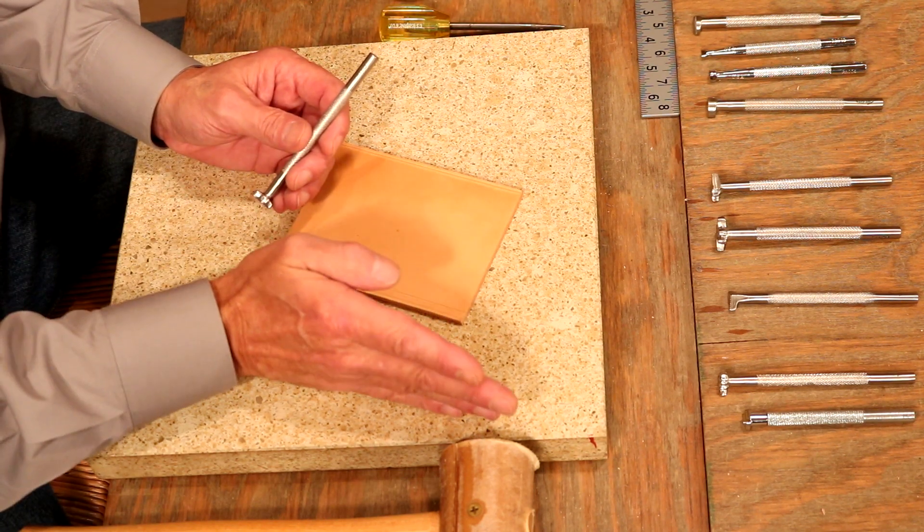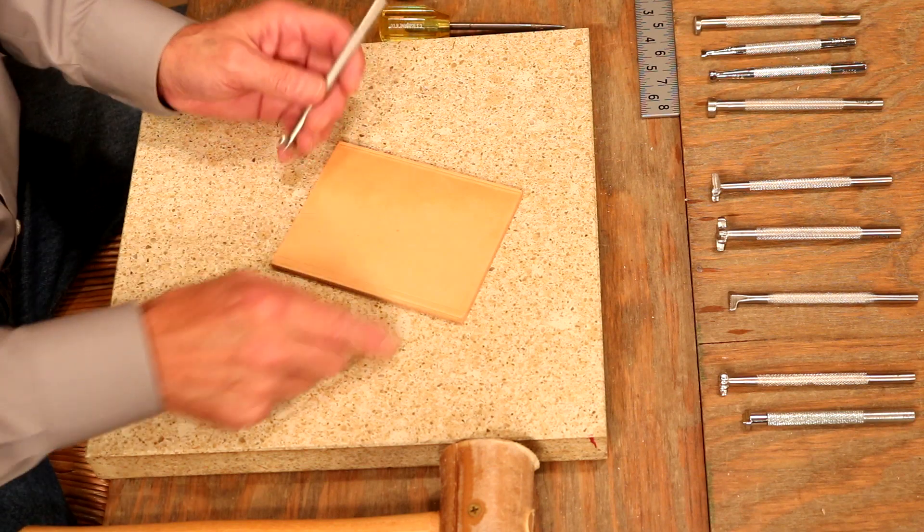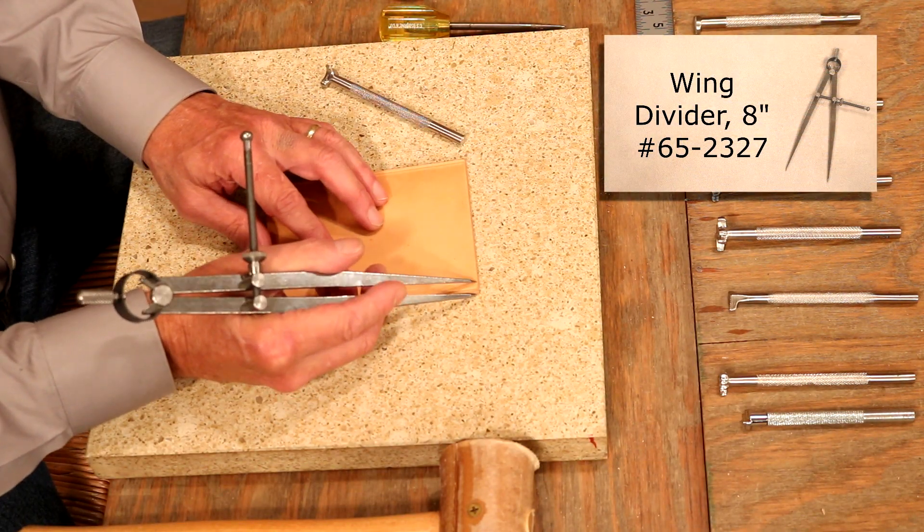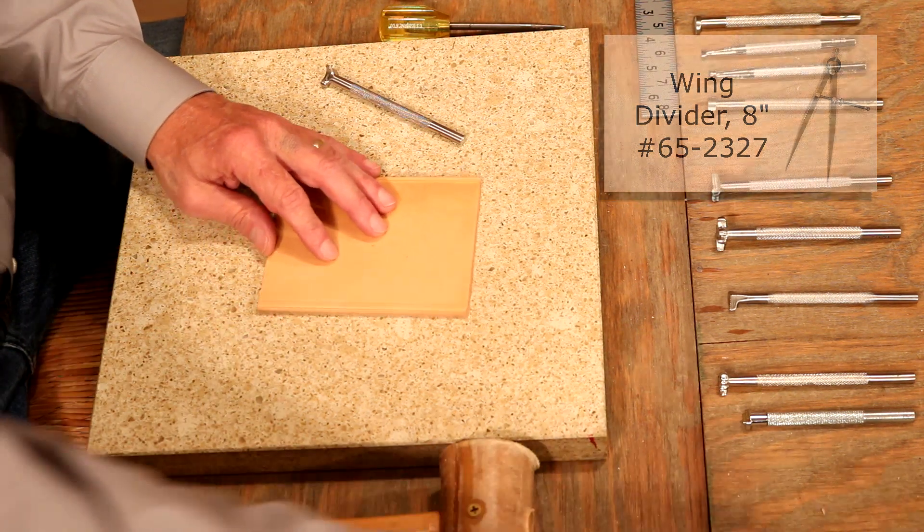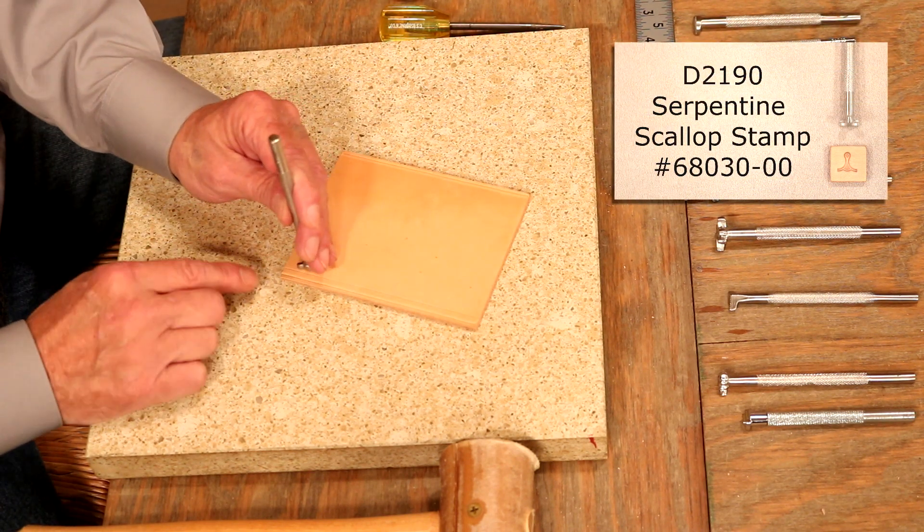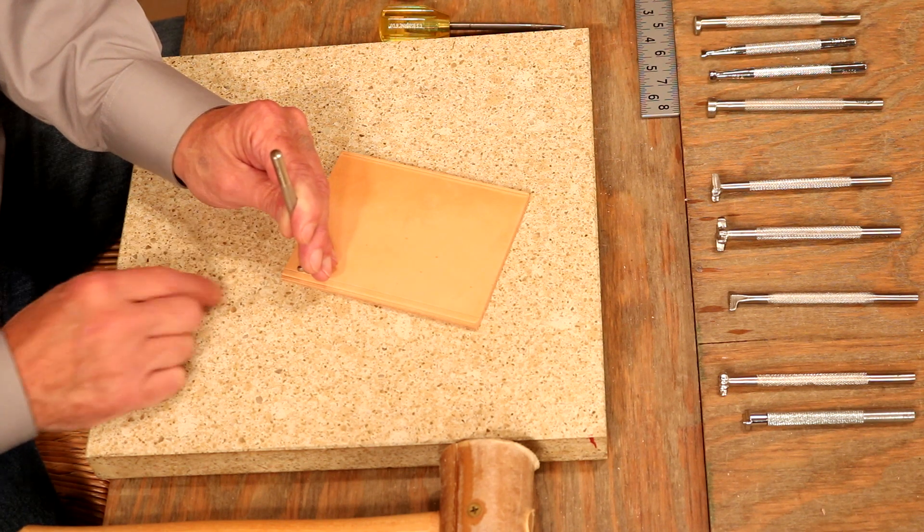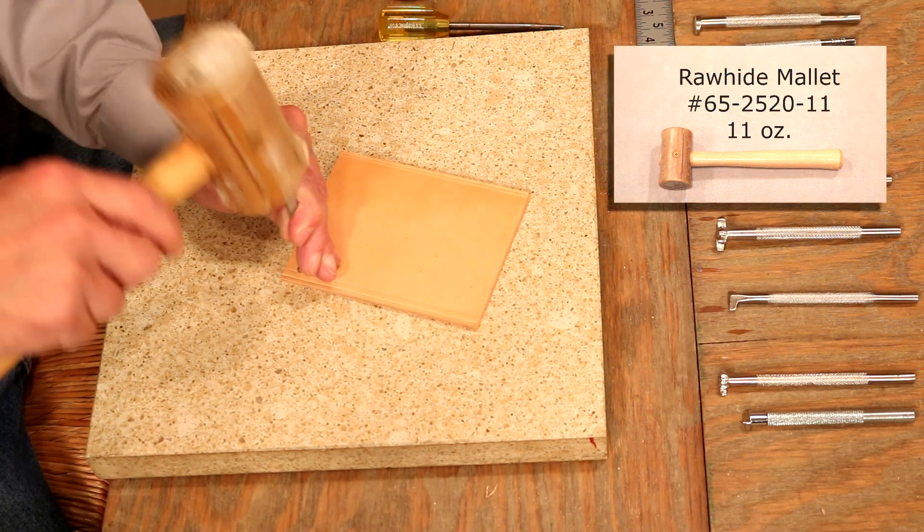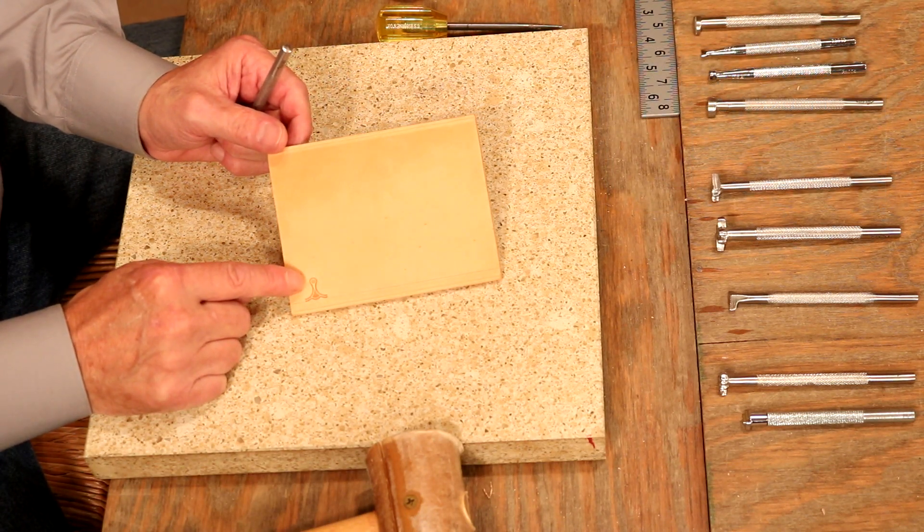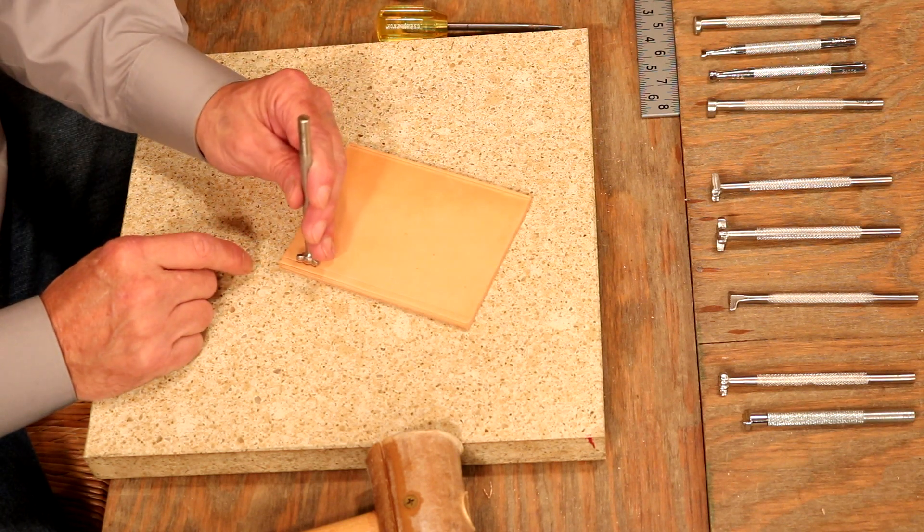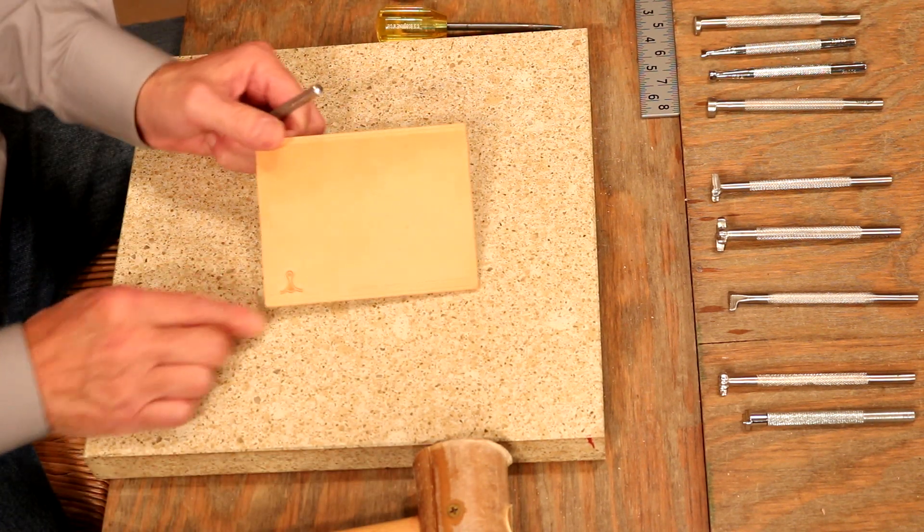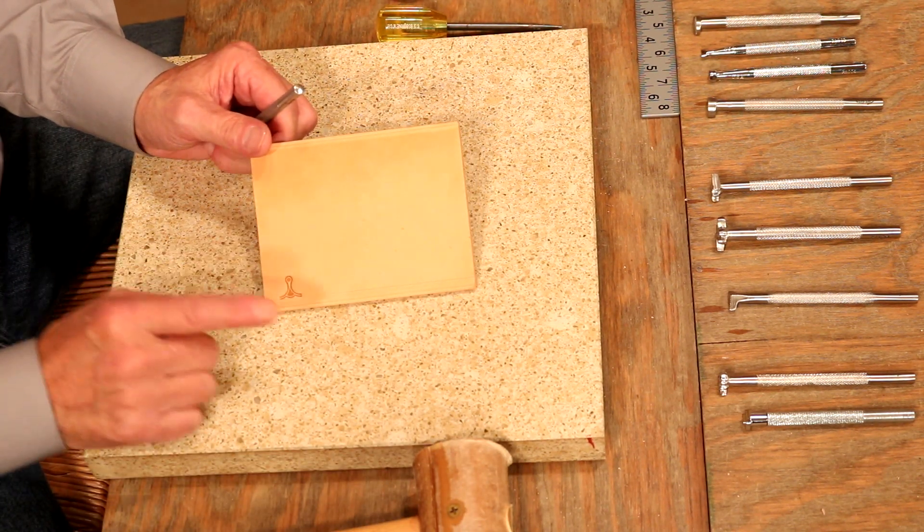We have to take our time to line them up, but also the consistency in the stamp head. Now, the saddle folks, they can nail it every time. The rest of us, we've got to work at it. But what I've done is I've dropped in a groove line, eighth of an inch in. Then I'm going to drop in a guideline, an eighth of an inch further, or about a quarter inch from our edge.